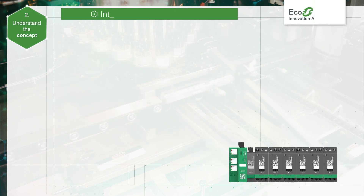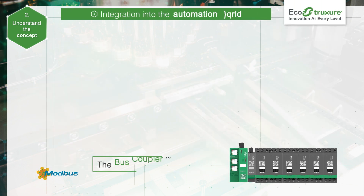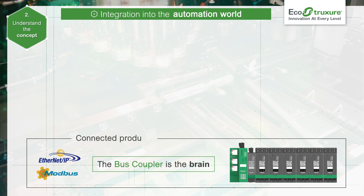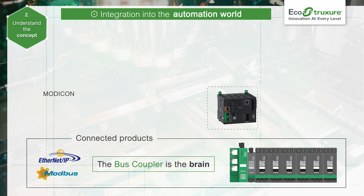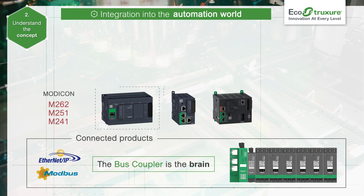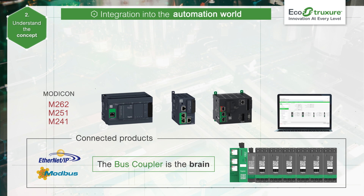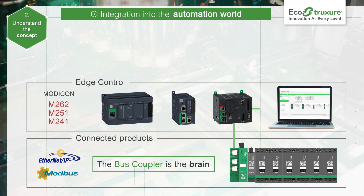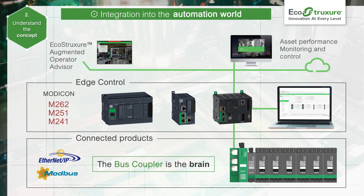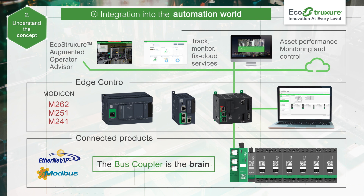Teesas Avatars are controlled by the island's bus coupler, which is the brain of Teesas Island. It manages the communication between the PLC and the island. This is how islands integrate with EcoStruxure Augmented Operator Advisor, Machine Advisor, and Asset Advisor — parts of the EcoStruxure apps and analytics architecture.